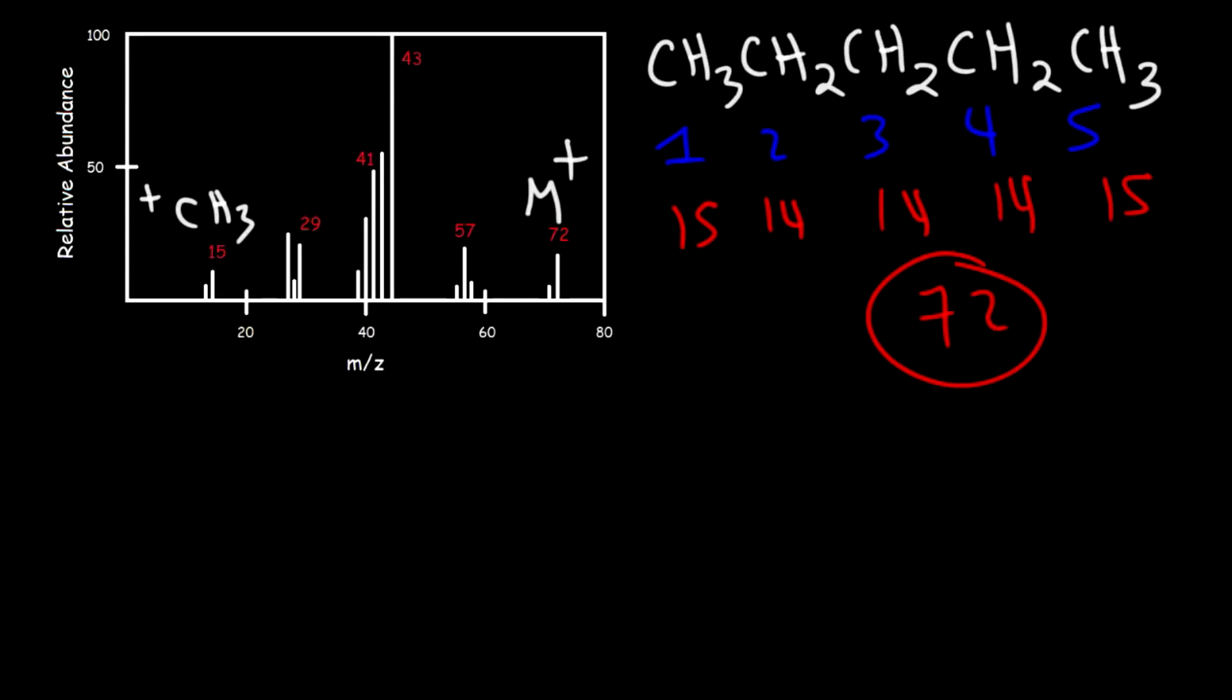If we break the C2-C3 bond we can get these two fragments: we can get an ethyl radical or an ethyl cation, but I'm only going to focus on the cations at this point. Or we can get a propyl radical or even a propyl cation.